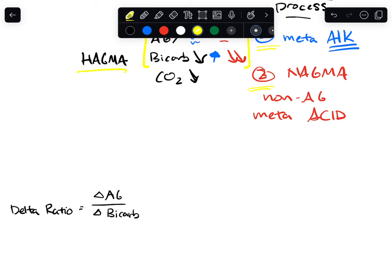The delta ratio is the delta anion gap over the delta bicarb. And by delta, what it means is the difference between the expected anion gap and the actual anion gap. In this case, our expected anion gap is going to be 12. So it's going to be the actual anion gap minus 12 over, and we'll use a standard bicarb of 24. So in this case, it's going to be 24 minus what the actual bicarb that we measure is.